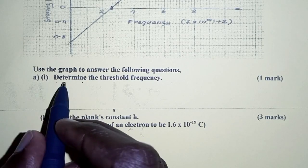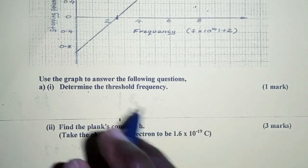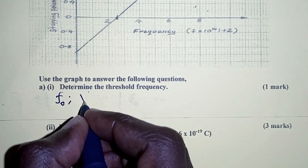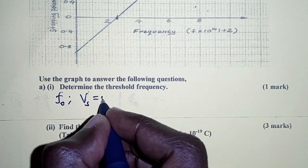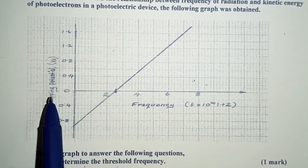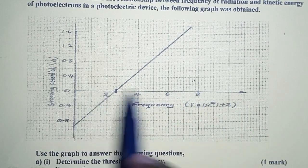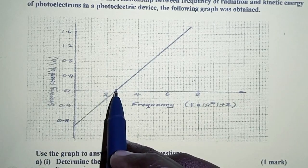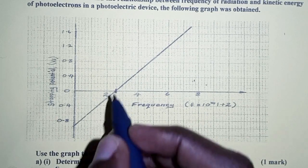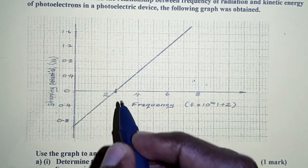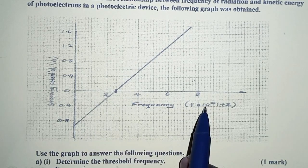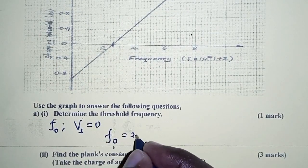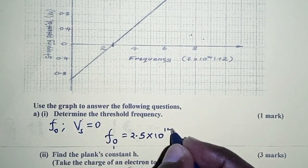For the first part, we are required to determine the threshold frequency. Now, the threshold frequency, which is denoted by F-naught, is where the stopping potential is zero. So we come to the graph at the point when the stopping potential is zero, that is on the x-axis, which represents frequency. At this point, F is 2.5, and we must multiply by 10 to the power 14. So the threshold frequency is 2.5 times 10 to the power 14 Hz.